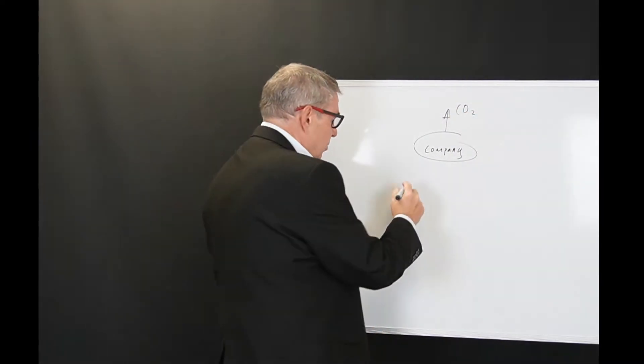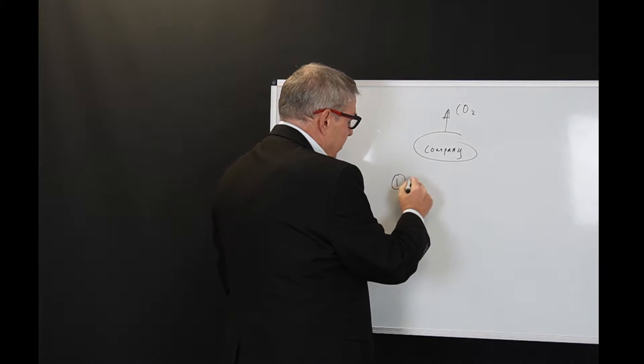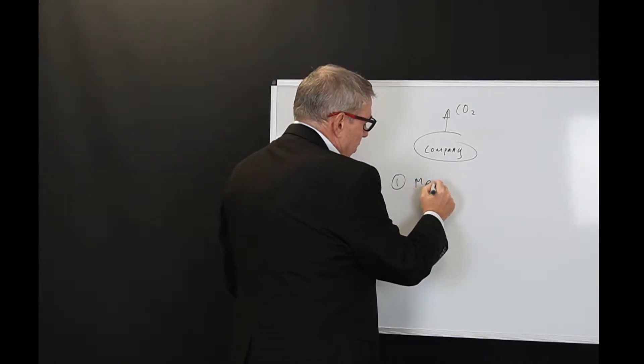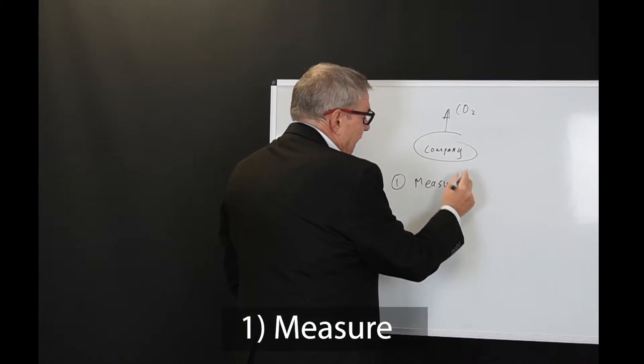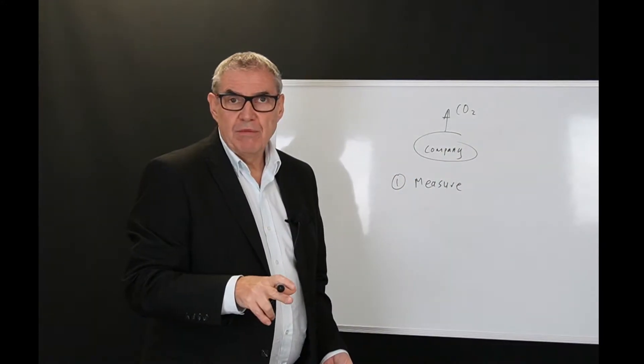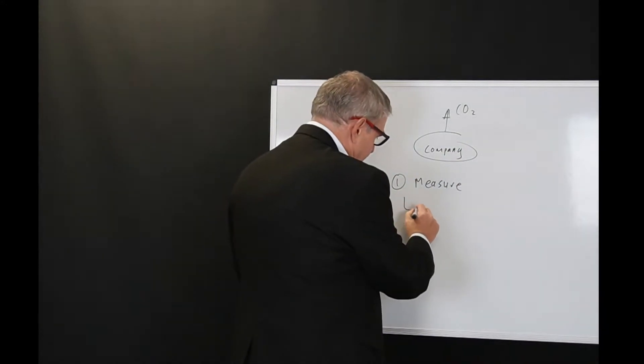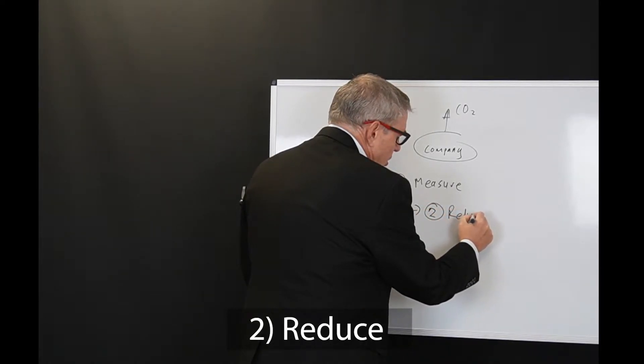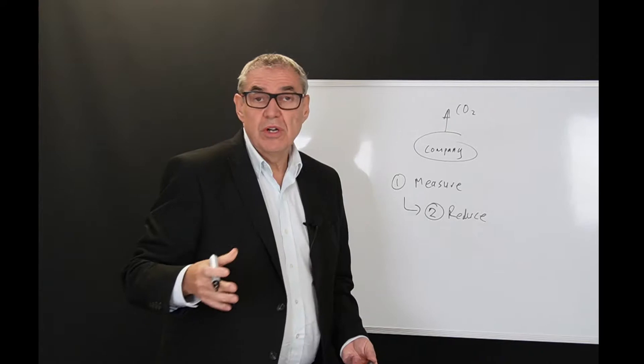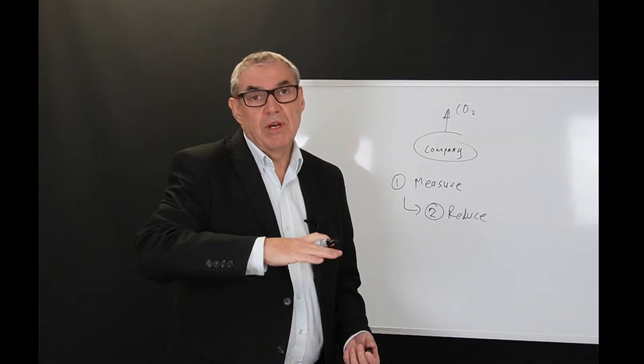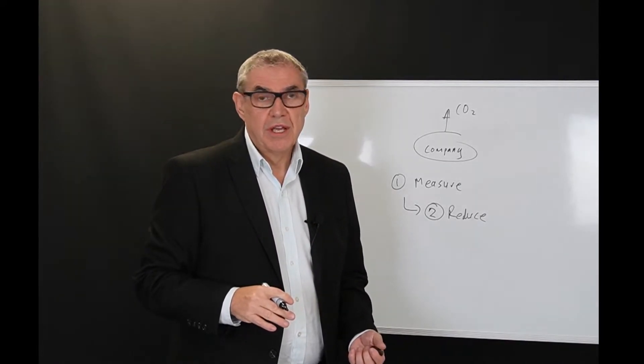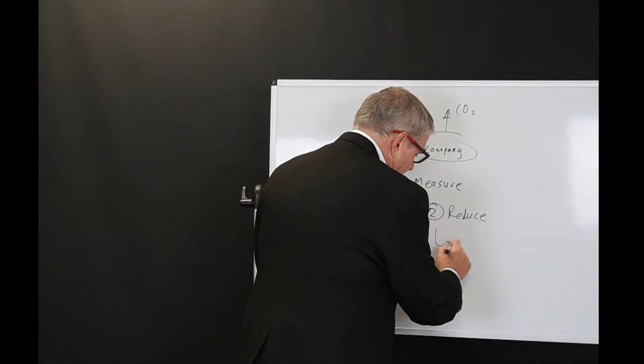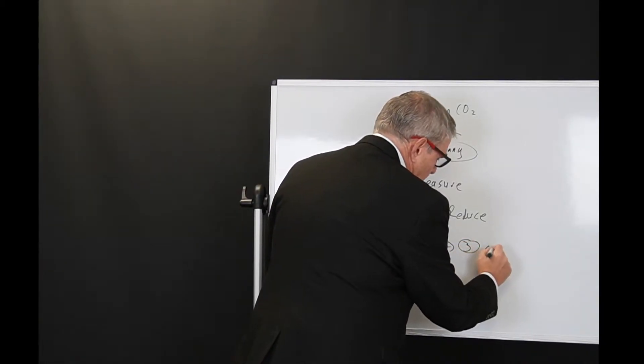Now net zero says that we go through a process of three stages. First we measure how much CO2 we're throwing into the atmosphere. Step two, we then reduce. Number three, we offset.